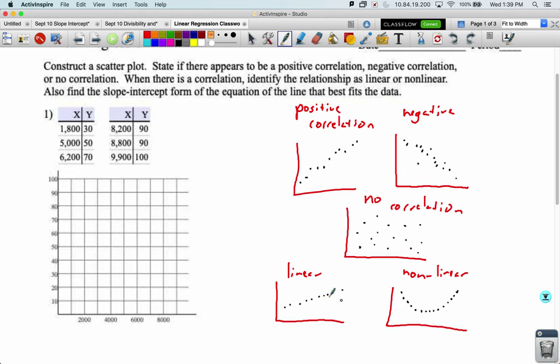Let's practice plotting some points. So the first number tells us how far to go over on the x-axis, the second number tells us how far to go up. That first point at 1,830 should be right about there. Maybe I cross it out so I don't accidentally plot it twice. 5,000 comma 50 should be right there. 6,20 comma 70. 8,20 comma 90. And then 8,80 comma 90, so same y-value but a little bit displaced on the x-value. And then 9,90 comma 100 is going to be right in that top corner.